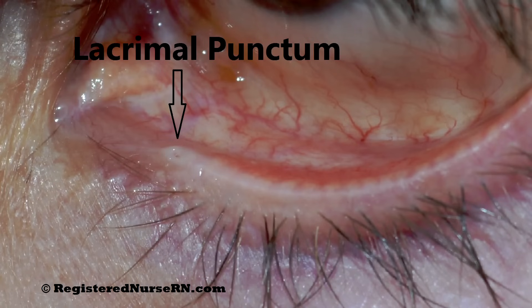To perform punctal occlusion, you take your finger and place it at the bridge of the nose over the punctum, holding firmly but gently to block the solution from going down into the nasolacrimal duct. We want the medication to stay in the eye — we don't want it going down through the throat and entering systemic circulation, because the patient wouldn't be getting the full dose in the eye, and second, it can cause systemic side effects that beta blockers produce throughout the body.